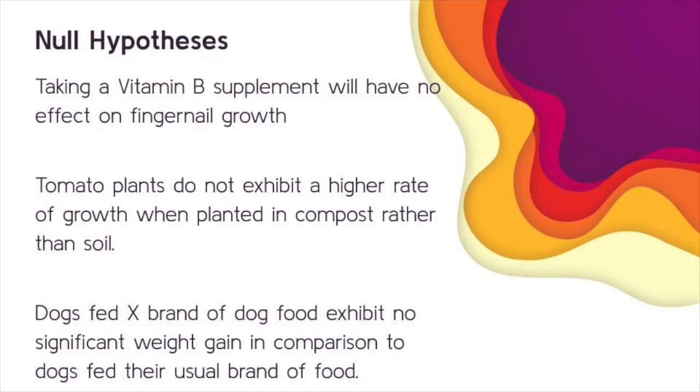When we're writing a null hypothesis, you're thinking about something that has no change, predicting that the results are going to be due to chance. Some examples could be: taking a vitamin B supplement will have no effect on fingernail growth, or tomato plants do not exhibit a higher rate of growth when planted in compost rather than soil, or dogs fed whatever brand of dog food exhibit no significant weight gain in comparison to dogs fed their usual brand of food. In genetics, your null hypothesis is going to be the data are consistent with the predicted method of inheritance.